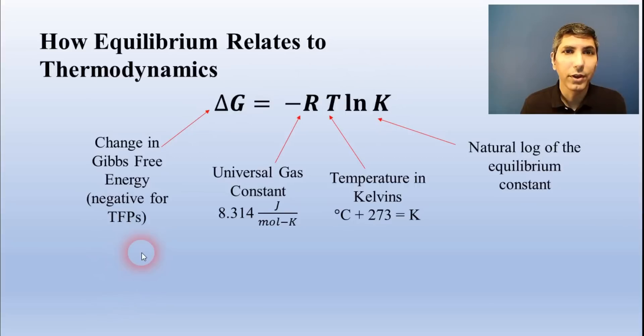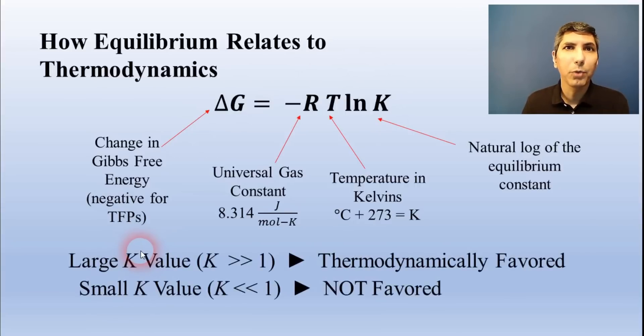Now, this equation tells us that when a reaction is thermodynamically favored, its delta G is negative, and its equilibrium constant will be a very large number, so we'll have a lot of product formed. Likewise, when a reaction is not favored, its equilibrium constant will be a very small number, as in much less than one, so almost no products will form.